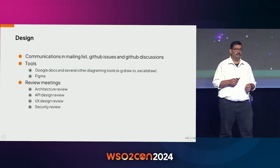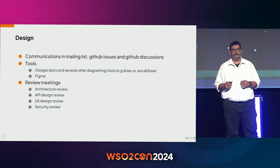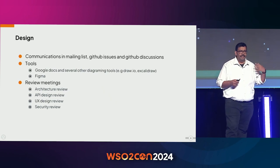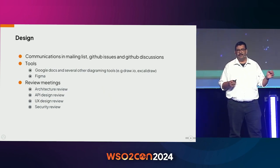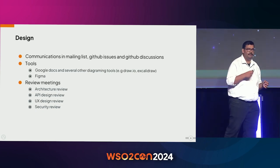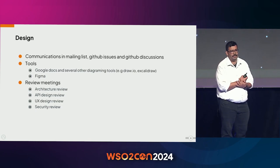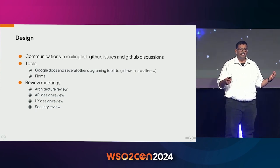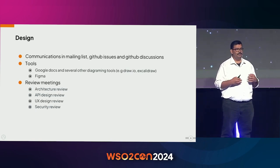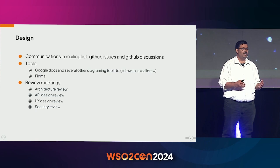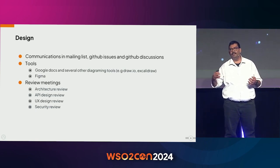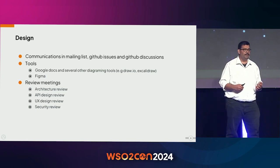For any discussions within WSO2, we use similar processes. Communications on design discussions happen on the mailing list or in GitHub issues, or GitHub Discussions in some cases like Ballerina. We encourage participation from multiple people to design the system — possibly designed by one person or one team, but giving all others a chance to view the designs and get feedback from various places.